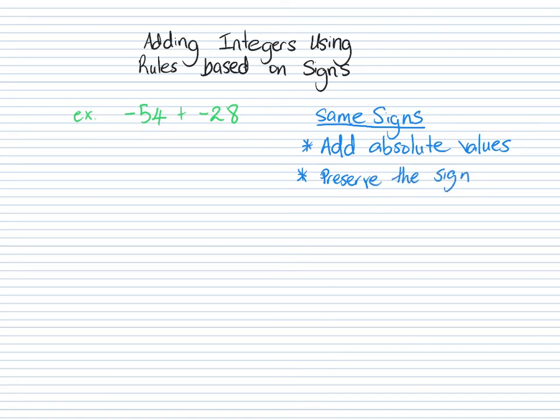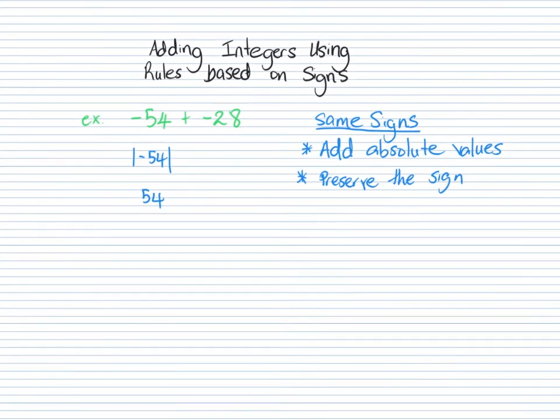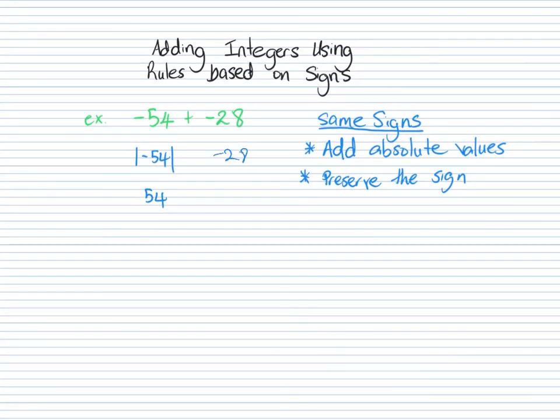So you may recall in another video when I spoke about absolute value, absolute values are numbers' distance from zero. So the absolute value of negative 54 is just 54, and the absolute value of negative 28 is just 28. And we're just adding those values there. So when we add those values, we get 82. But what did I say? We need to preserve the sign. So the answer is negative 82.